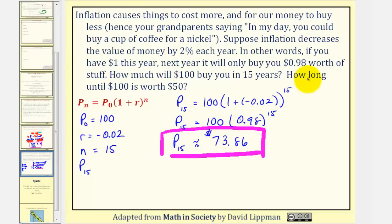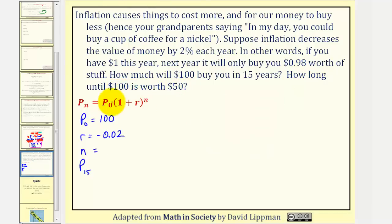And we'll have to use a second setup to determine how long until $100 is worth $50. So to answer the second question, P₀ is still 100, r is still negative 0.02. But now we don't know n, because we're trying to find when Pₙ, the value after n years, is equal to $50.